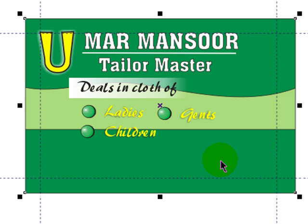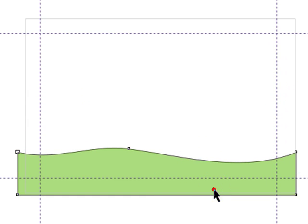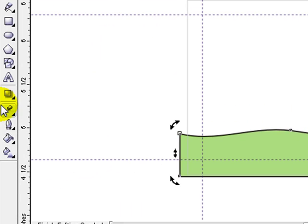Now we have to move it to the bottom, so we need to edit it. From the Effect menu, you can click with the keyboard or mouse to edit it. Press Ctrl from the keyboard and click anywhere on the first rectangle to edit the PowerClip. Hold Ctrl and click once to enter edit mode.